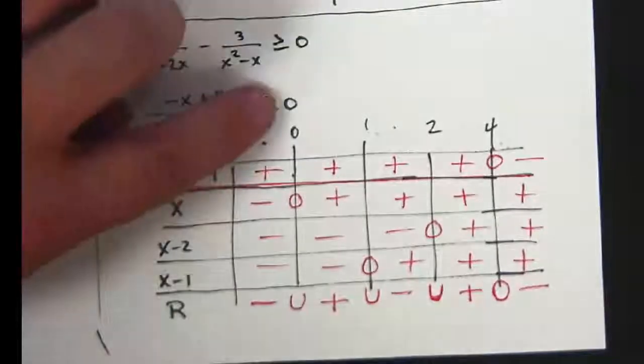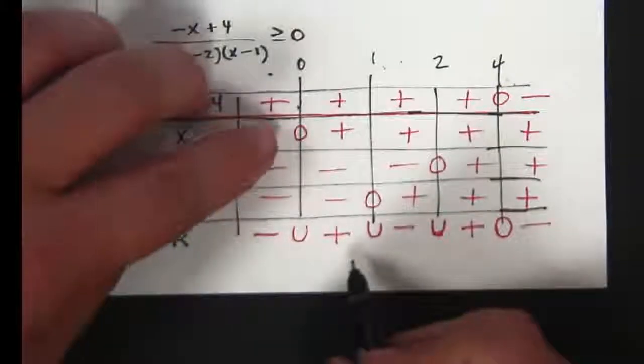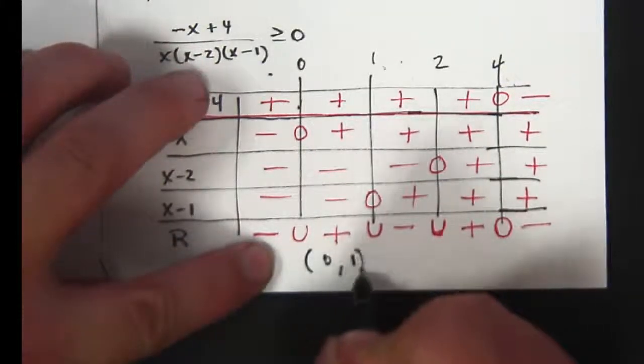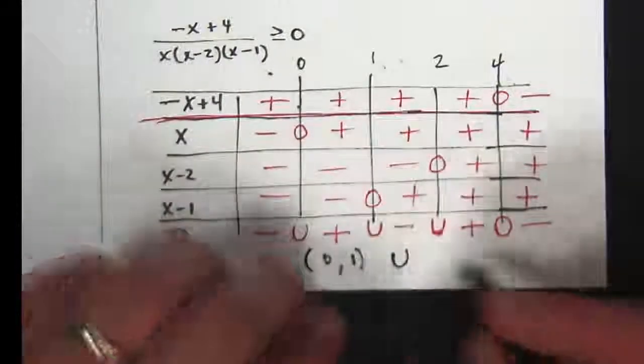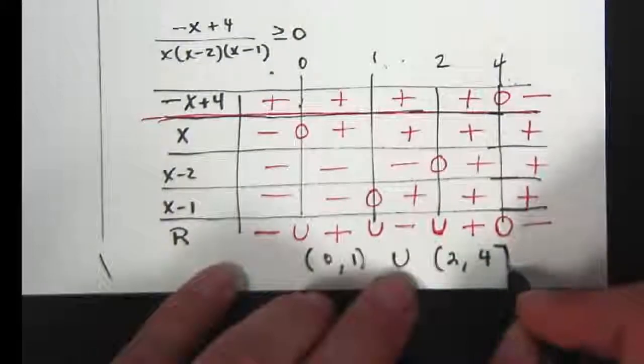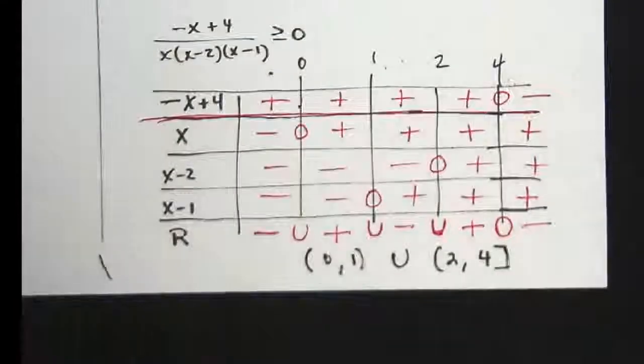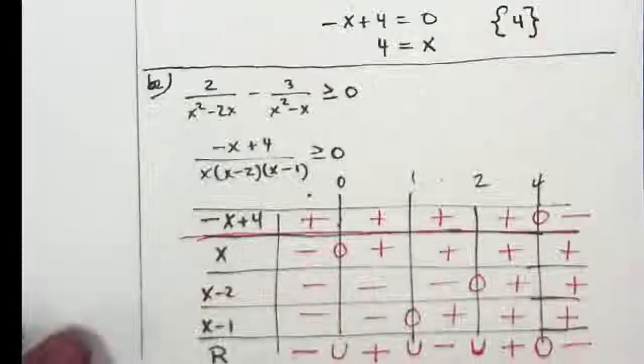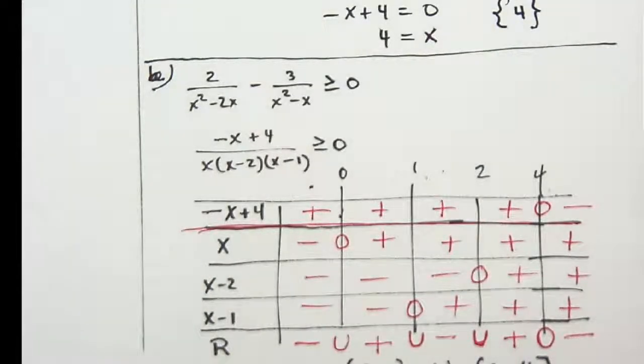So where is it bigger than or equal to zero? From zero to one, union two to four. Bracket on four because I said bigger than or equal to zero, so we can include four. I'm not going to ask anyone that hard, but if you get that, you're awesome. Well done. You should do fine on that part of the test. Okay, thank you very much.